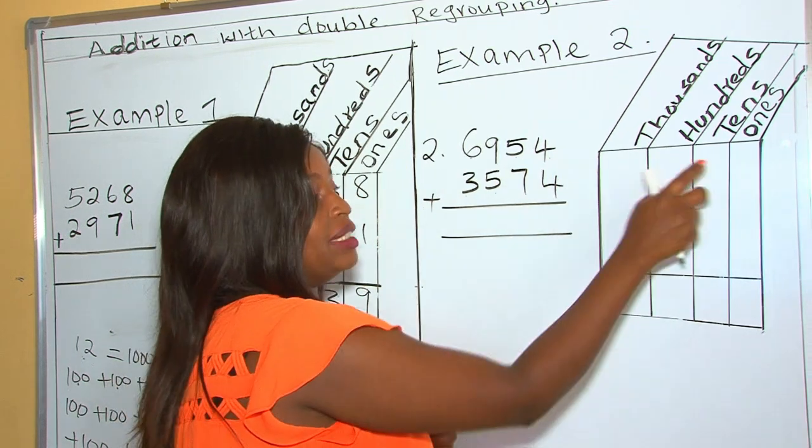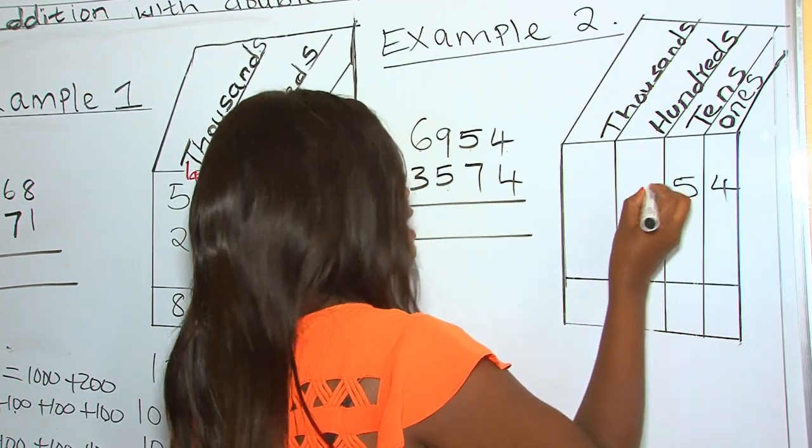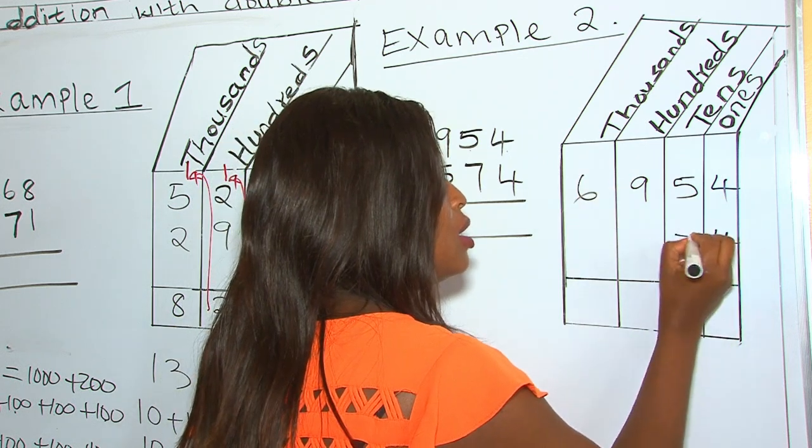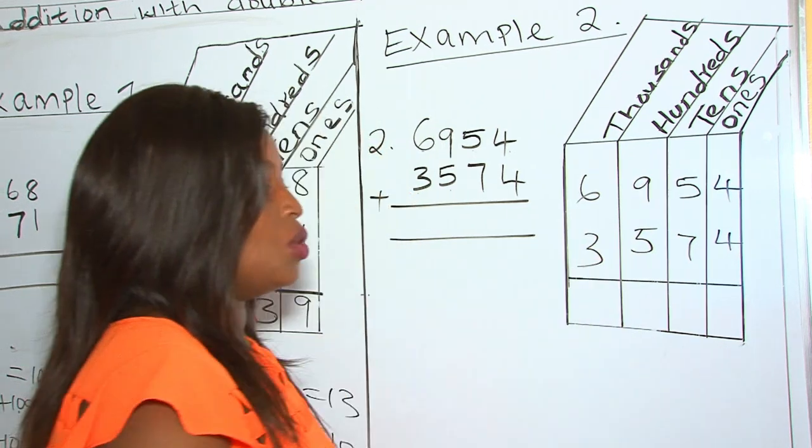So as we put them there, we begin with the ones. So 4, 5, 9, 6, 4, 7, 5, 3.